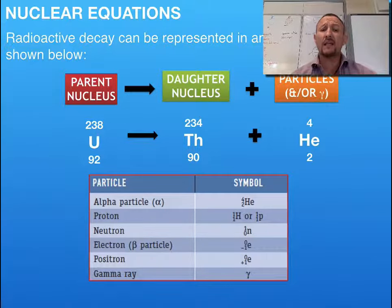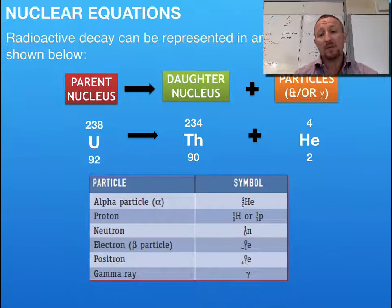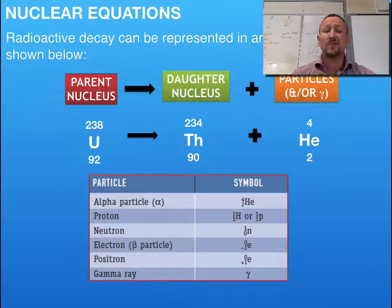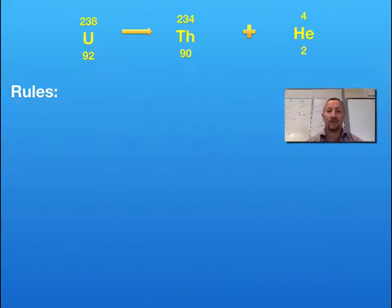Now generally what we're going to be dealing with is our alpha particles, our beta particles. We may deal with positrons and neutrons and to a very small extent we might deal with protons later on in this course. So let's look at an example and let's see how we can pull these equations together.